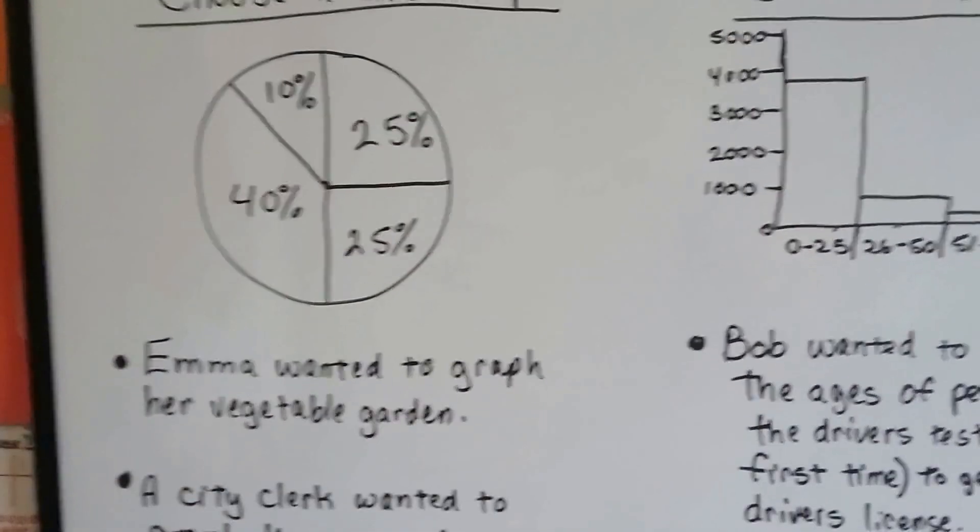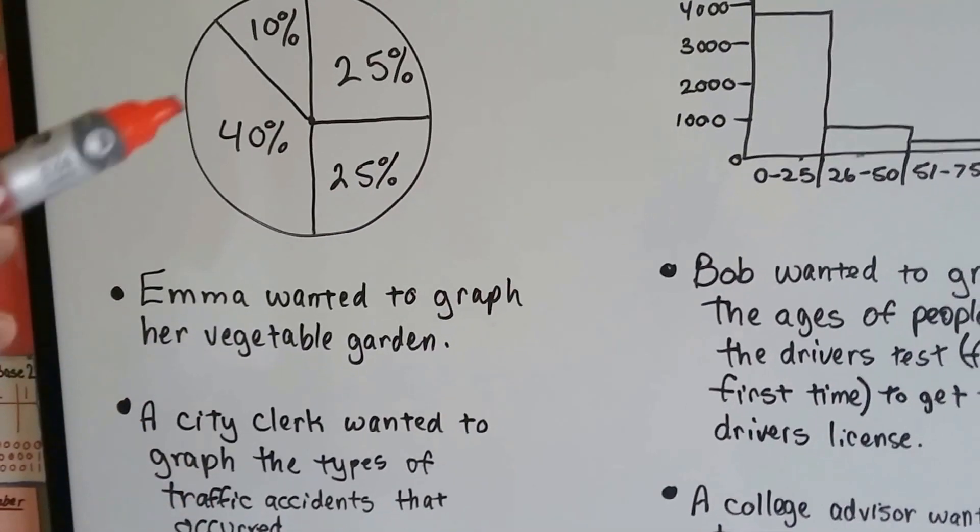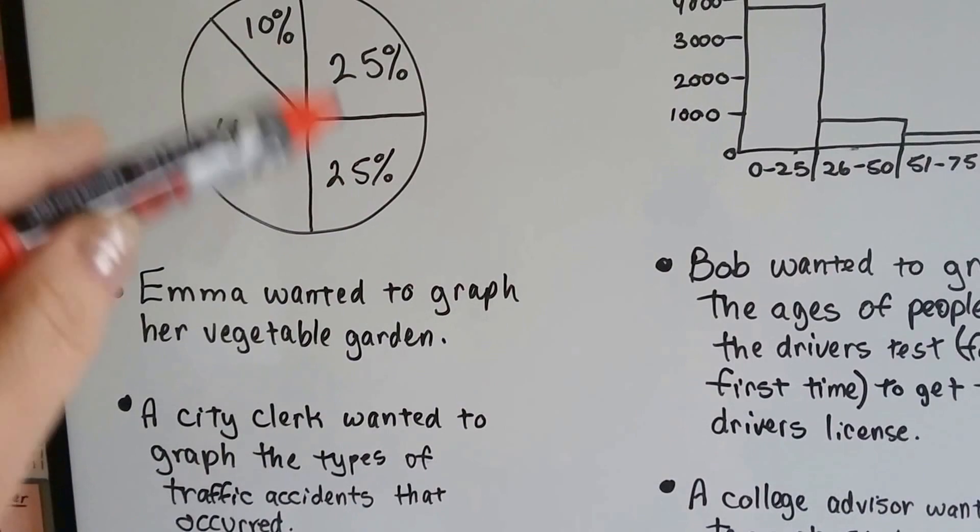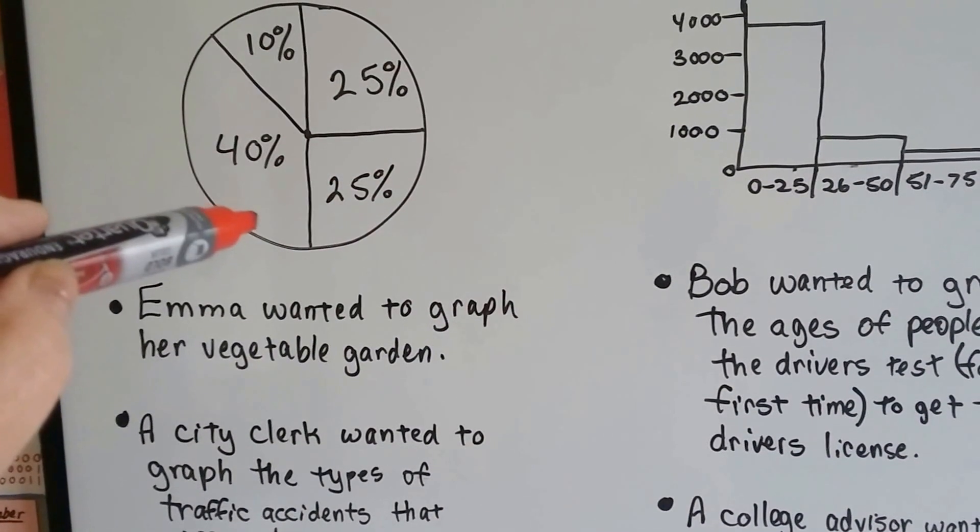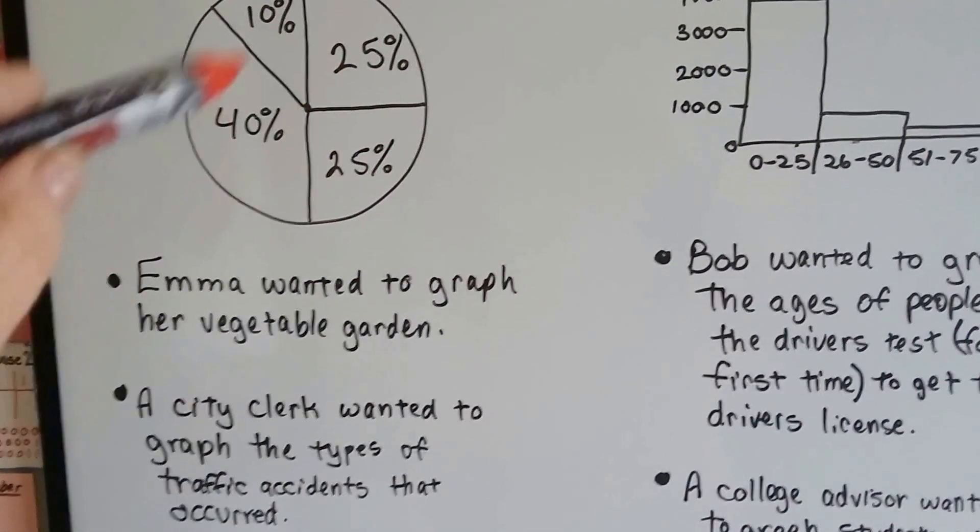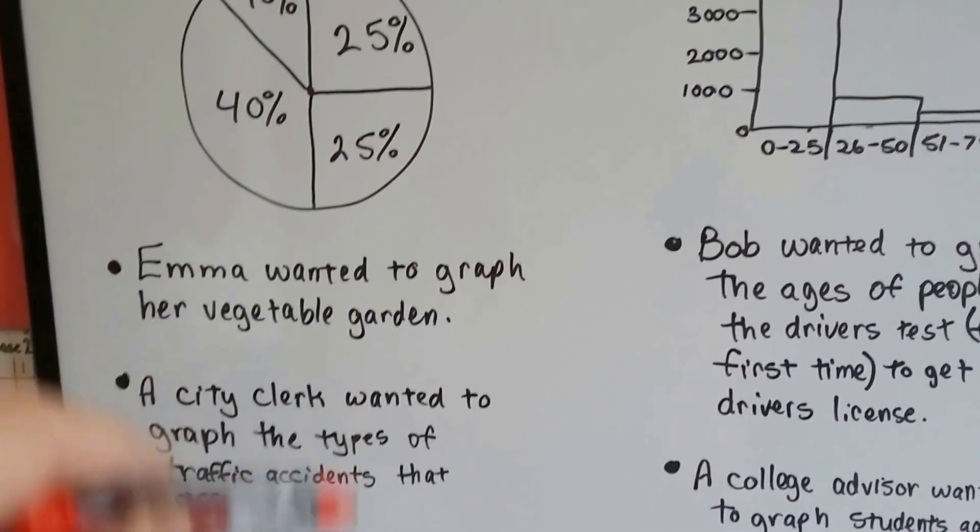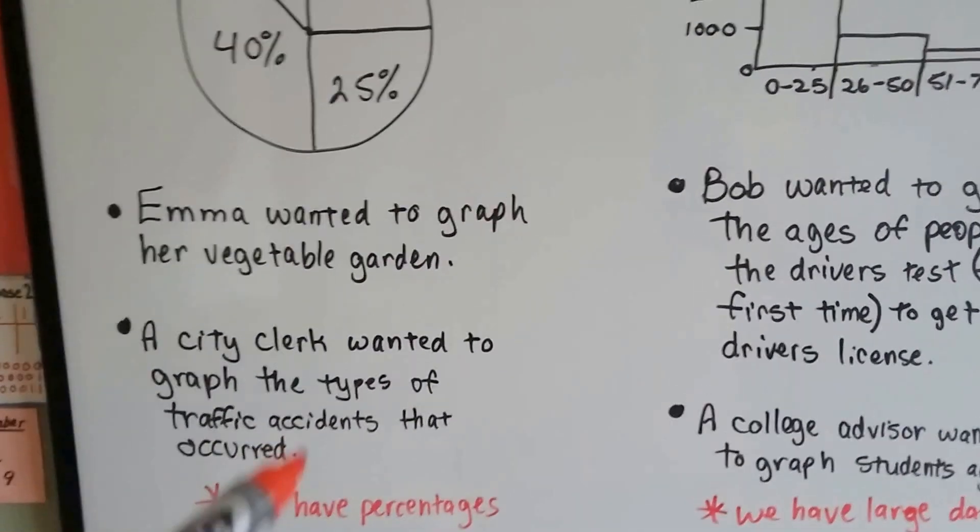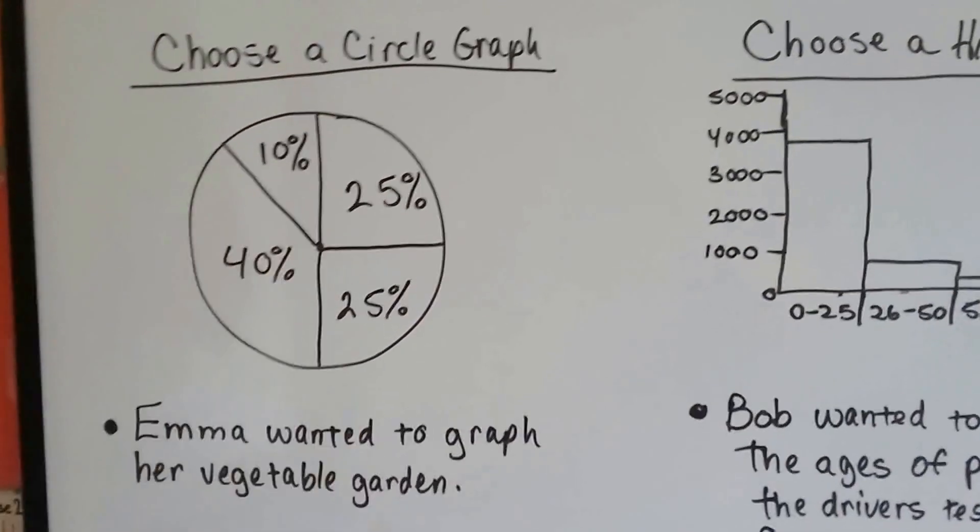If a city clerk wanted to graph the types of traffic accidents that occurred at a certain intersection, she could use this if she had the percentages of the types of accidents. When we have percentages, a circle graph is a good way to go.